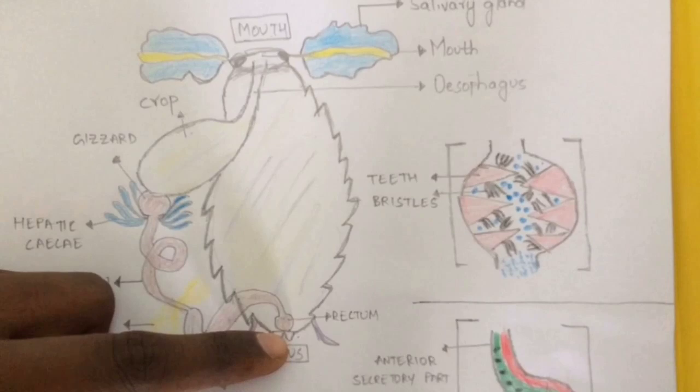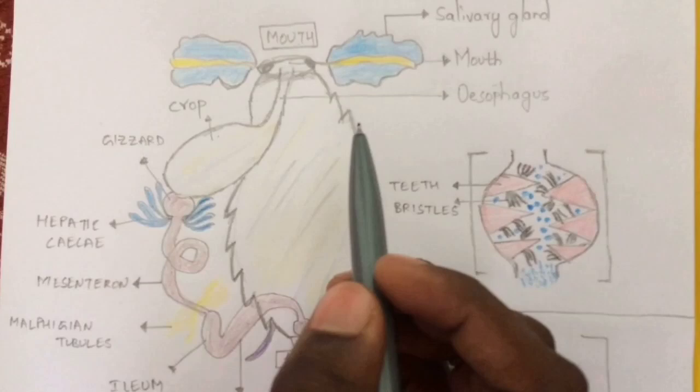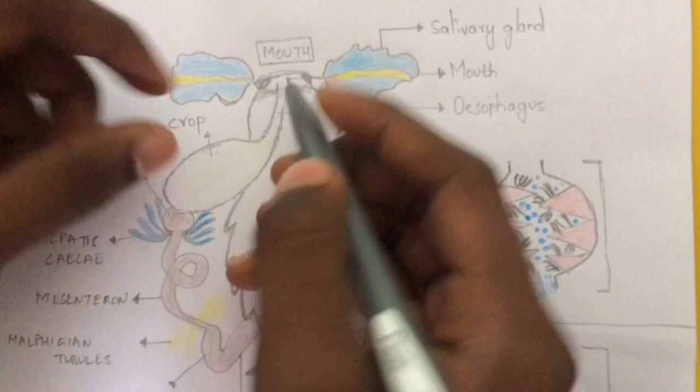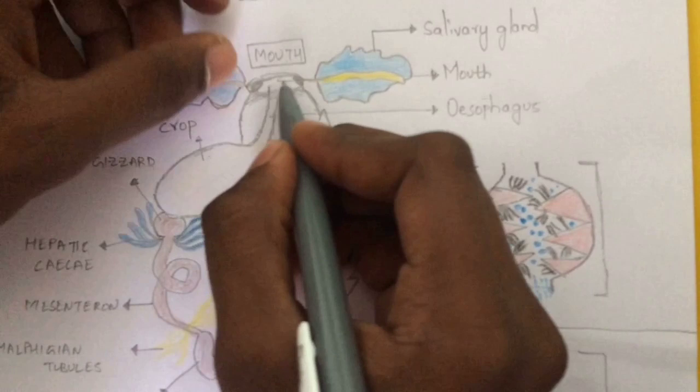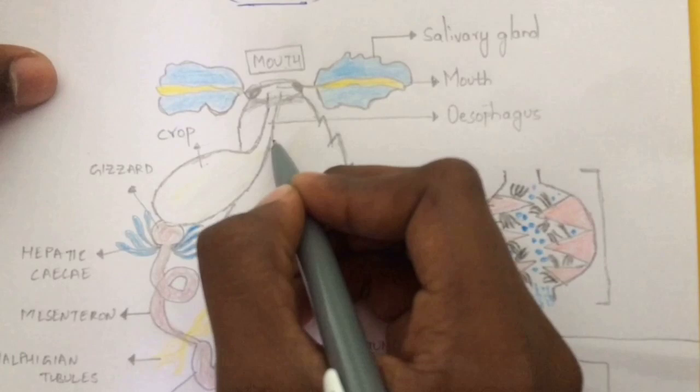Now let us talk about the foregut. The foregut includes pharynx, esophagus, crop, and gizzard. The pharynx mainly starts from the mouth, and leads to the opening of the esophagus. The esophagus is a tubular structure.